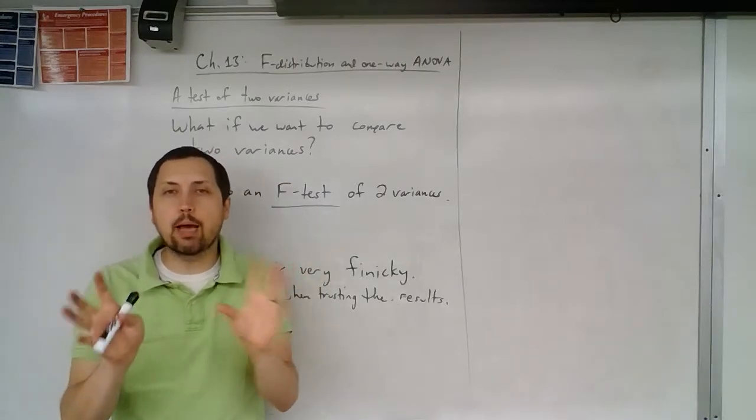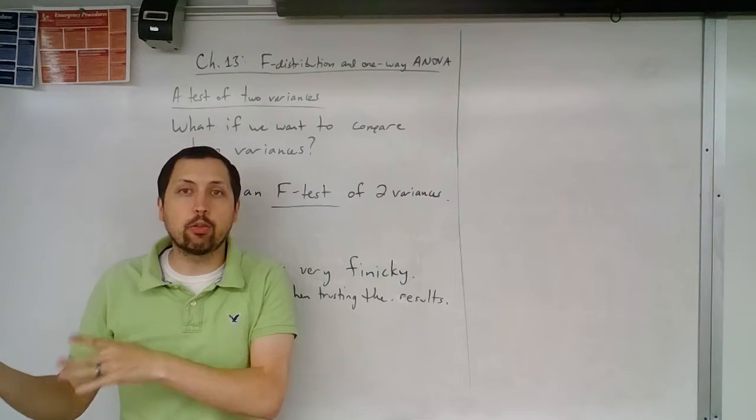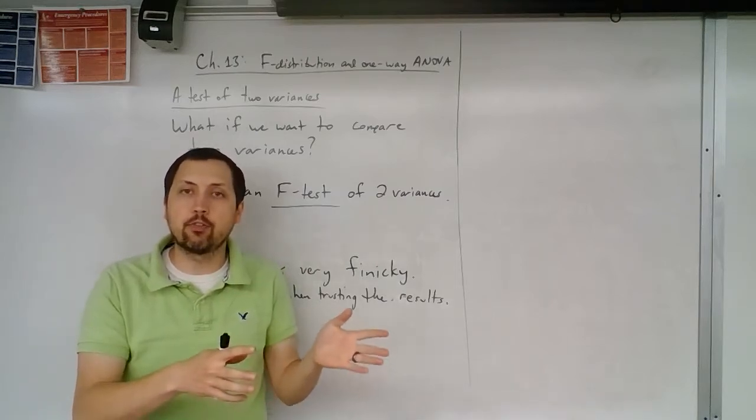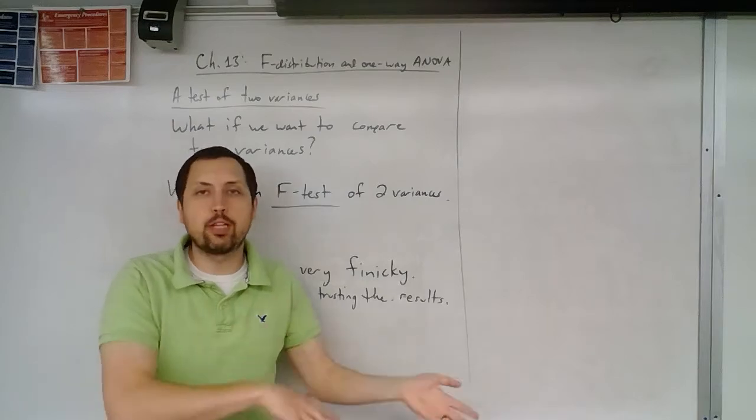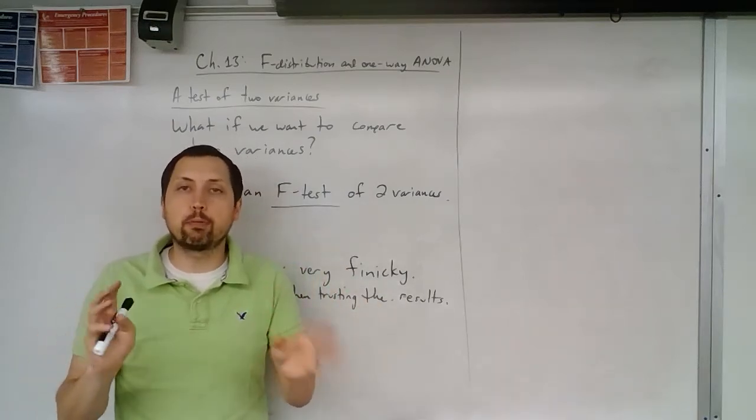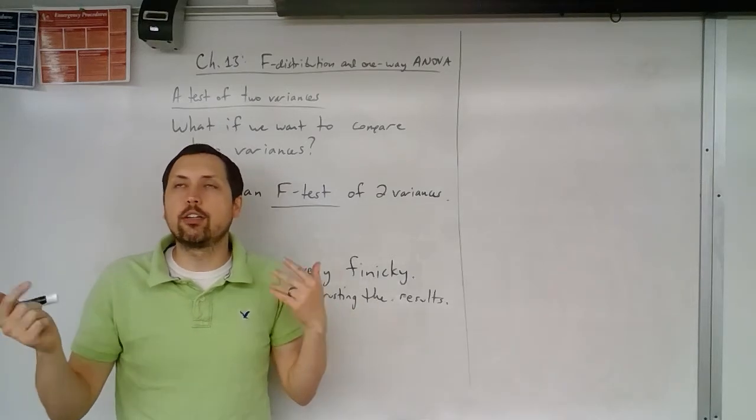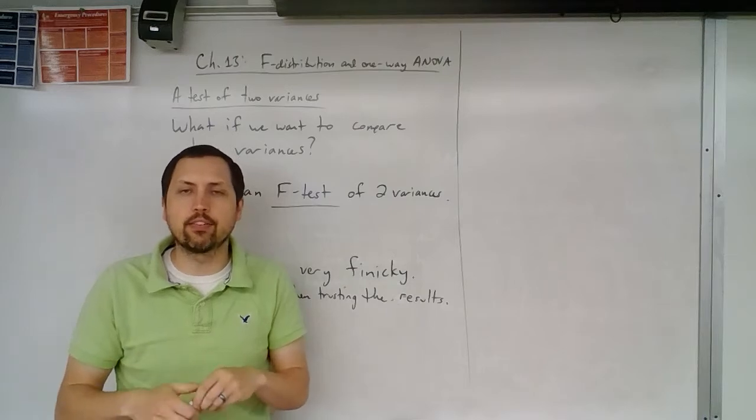So far, we've compared two sample means, either with a population standard deviation for both or without. One was the two-sample Z-test, another the two-sample T-test. Then we also compared two population proportions, and we did that two-proportions Z-test.